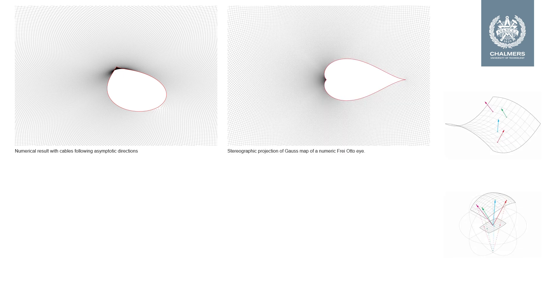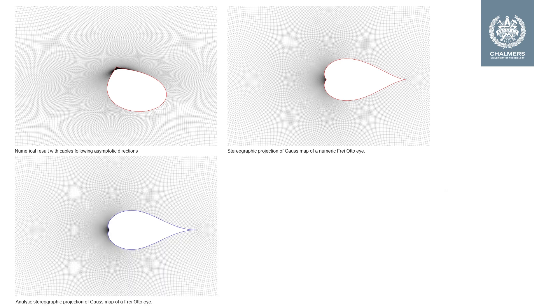Here we see the form-found surface again, and we can easily get the stereographic projection of the corresponding Gauss map. In our paper, we have also made an attempt to construct the same surface analytically.